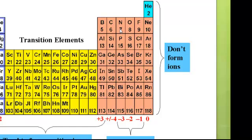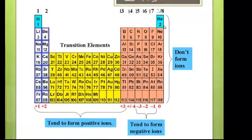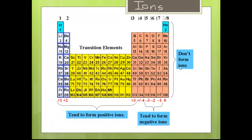Nitrogen forms negative threes. Some of the carbon family can gain or lose electrons. We'll talk about that later. But what's important here also is the noble gases don't form ions at all.